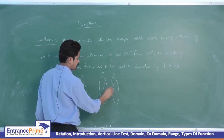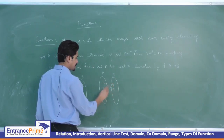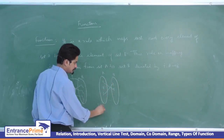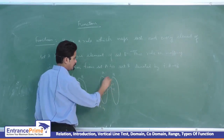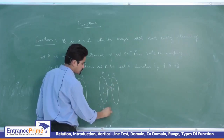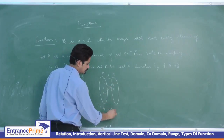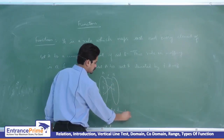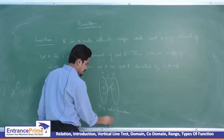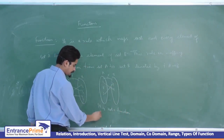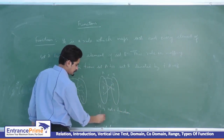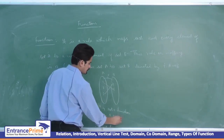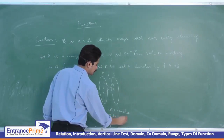Now suppose we have this type of mapping — then it is not a function from A to B, as element two has no image.